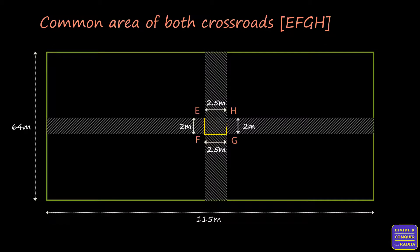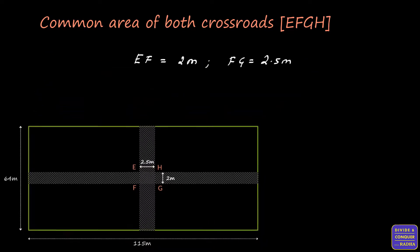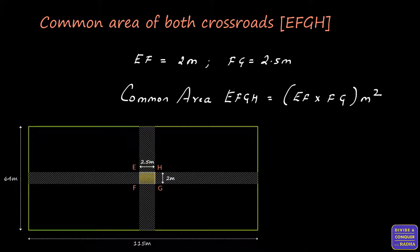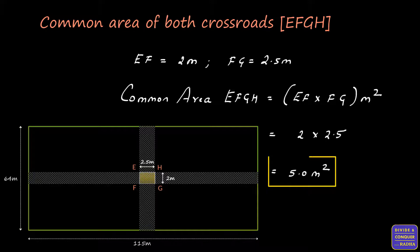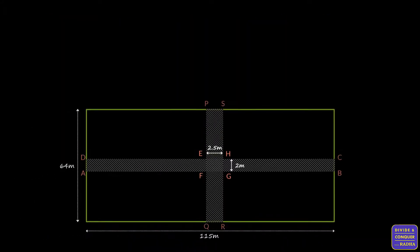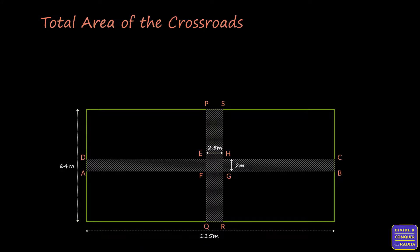Now let's calculate the common area EFGH. EF is equal to 2 meters and FG is equal to 2.5 meters. For the common area, we again use the formula length into breadth: EF into FG. Substituting the values: 2 into 2.5, which equals 5 square meters. Therefore, common area EFGH is equal to 5 square meters.